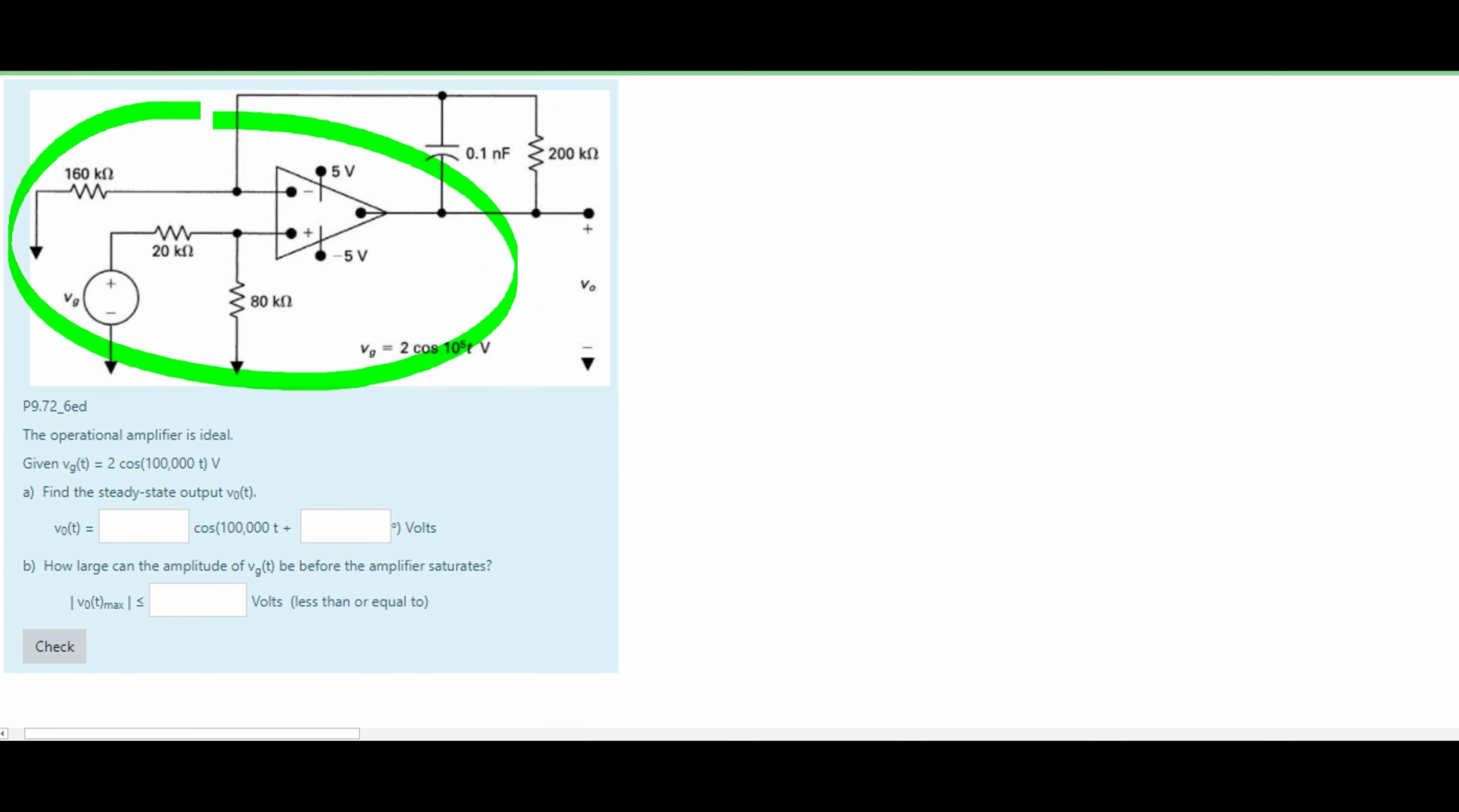In this problem we are given the following op-amp circuit. We're told that the op-amp is ideal. We are also given this information for our VG of T and we need to find the steady state output.